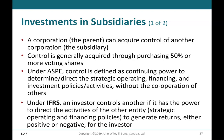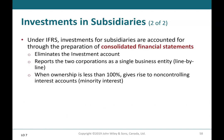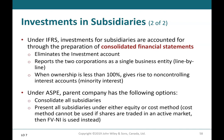Under IFRS, an investor controls another entity if it has the power to direct the activities — strategic operating and financing policies — to generate returns, either positive or negative, for the investor. Under IFRS, investments in subsidiaries are accounted for through the preparation of consolidated financial statements, which eliminates the investment account and reports the two corporations as a single business entity line by line. When ownership is less than 100%, non-controlling interest (minority interest) accounts arise. Under ASPE, the parent may consolidate all subsidiaries, or present all subsidiaries under either the equity or cost method; the cost method cannot be used if shares are traded in an active market, in which case fair value through net income is used.